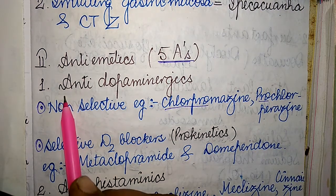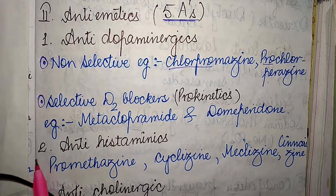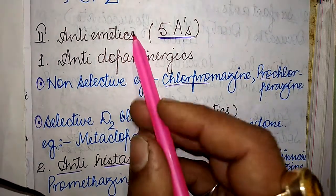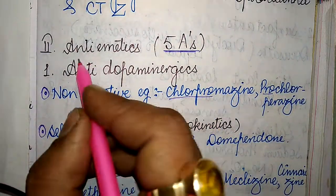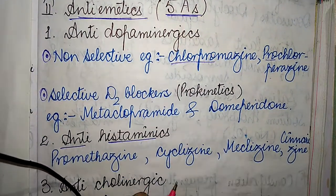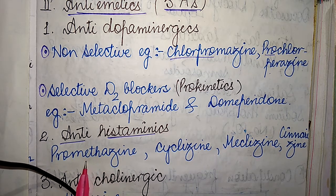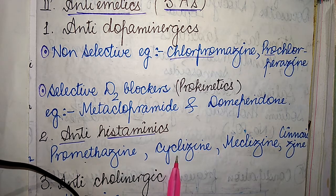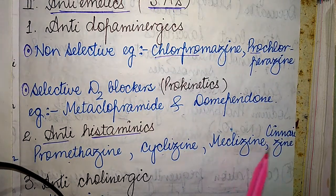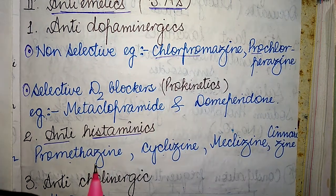The second A refers to anti-histaminics. This class of anti-emetic drugs includes promethazine, cyclizine, meclizine, and cinnarizine.